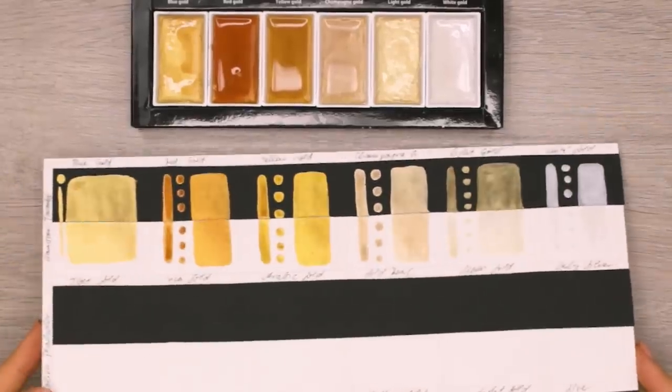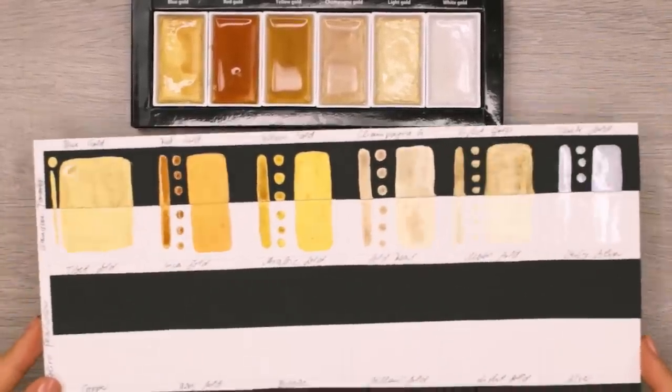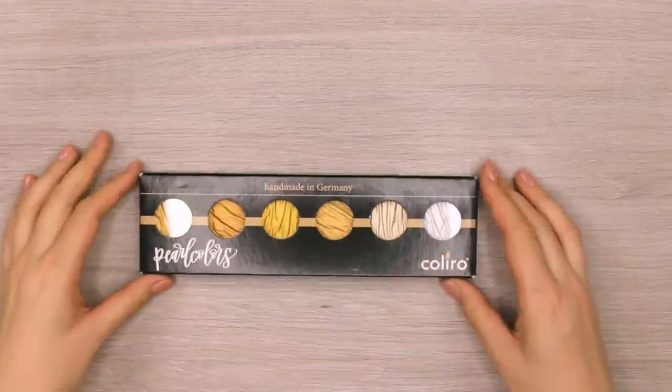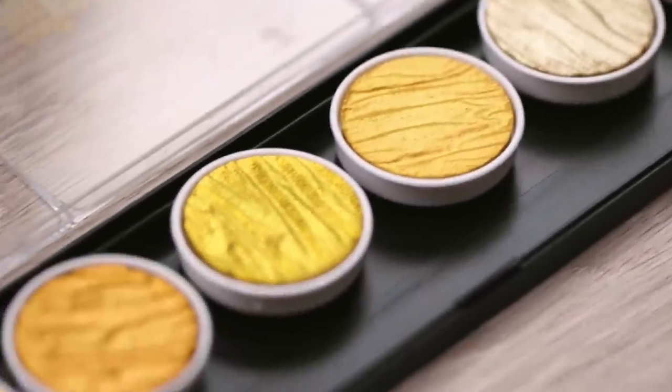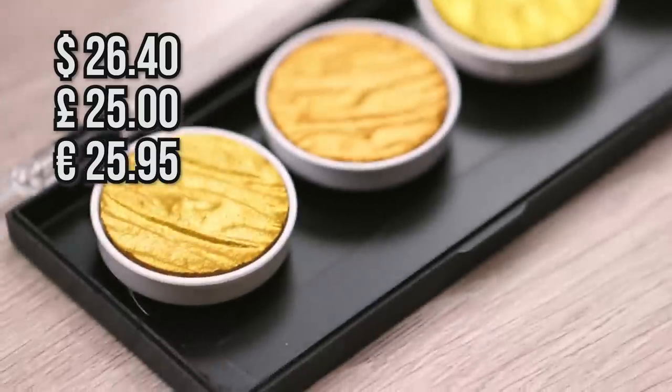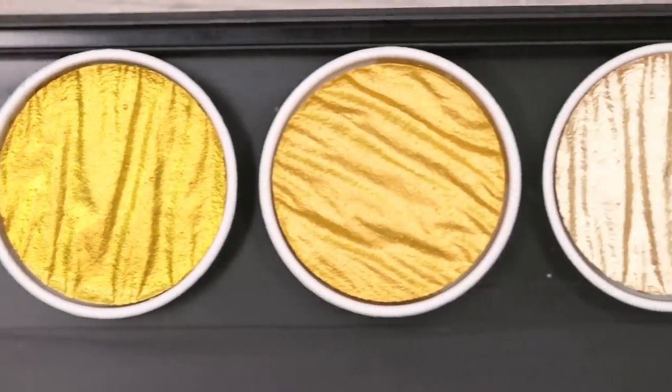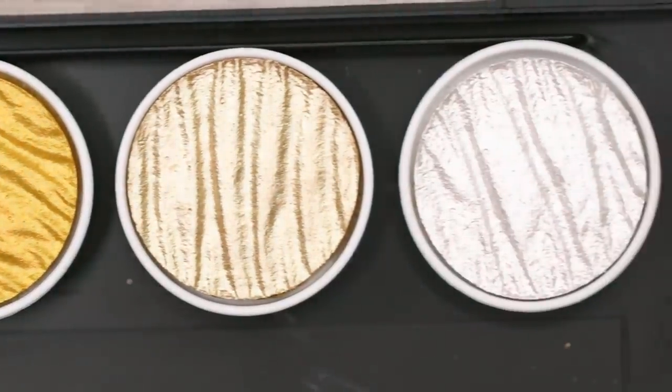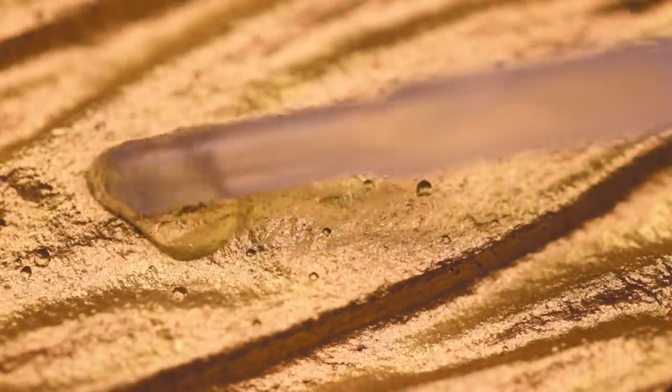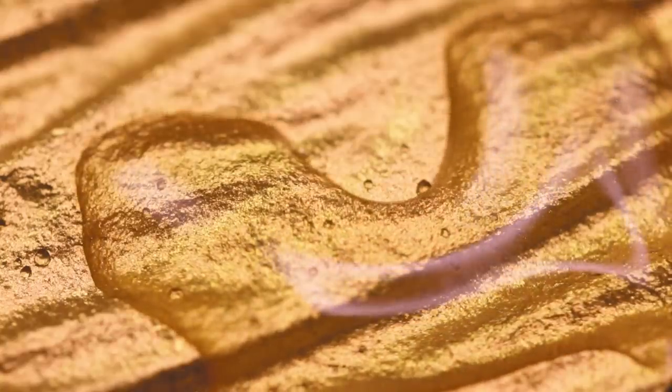All in all, this set performed really well. Next, we have the Pearl Color set that you can get for about $26 on Amazon. It also comes with six beautiful shades from gold to silver that are shimmery as well. With this set, I repeated the same steps. I first added a little bit of water on top of each color and let the paint soak up the water for a bit.